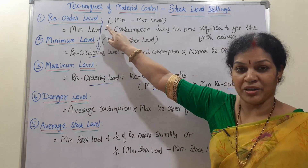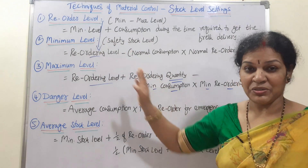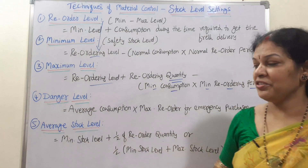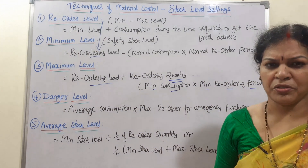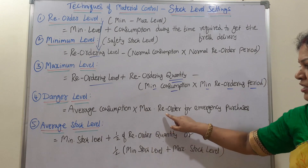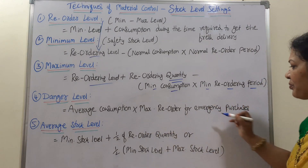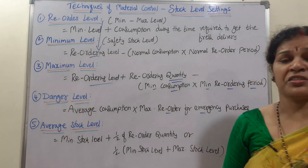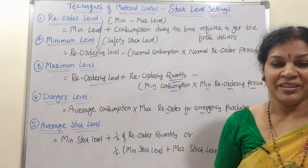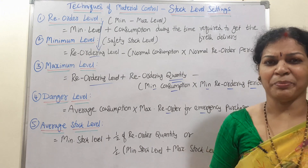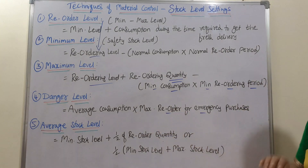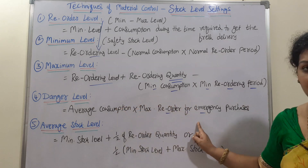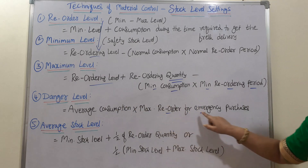For the danger level formula, we do not use reorder level — reorder level is only for minimum and maximum level. The formula for danger level is: average consumption multiplied by maximum reorder period for emergency purchases. For example, in an emergency, someone might request at least 100 units just to start their work. That minimum emergency request is factored into this calculation.